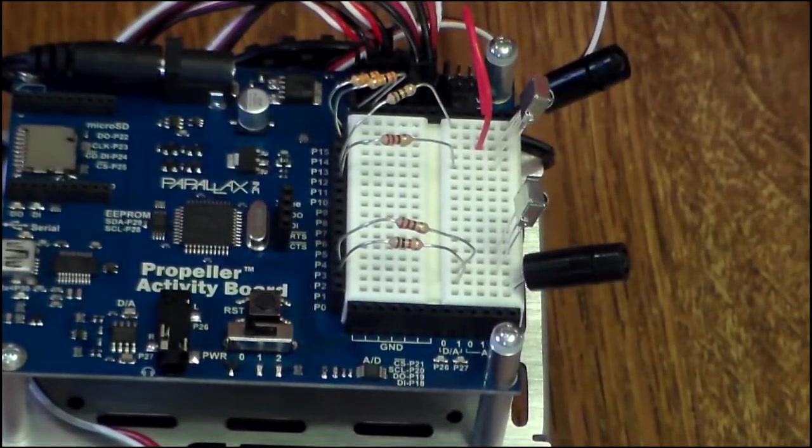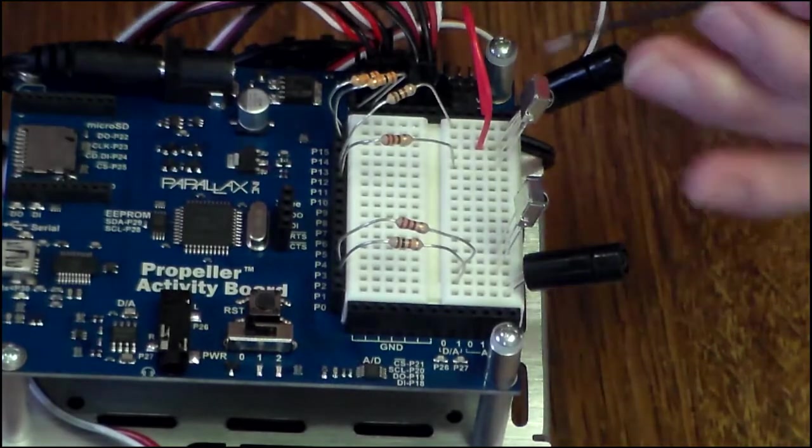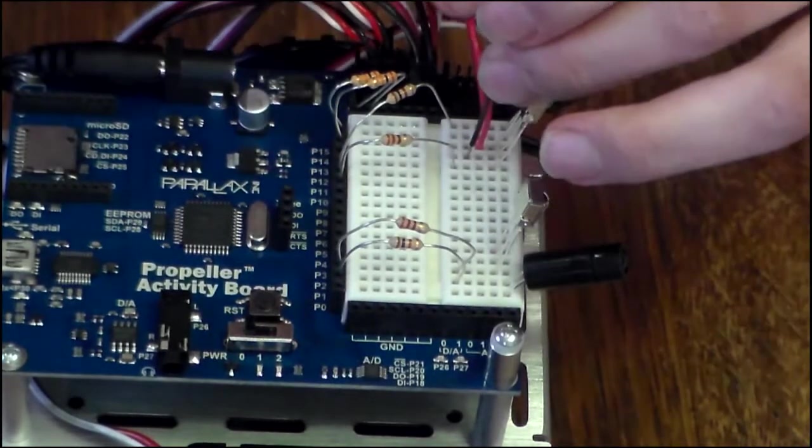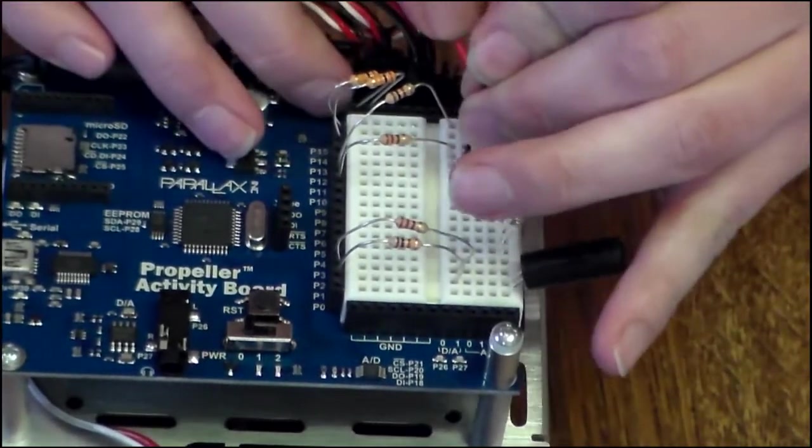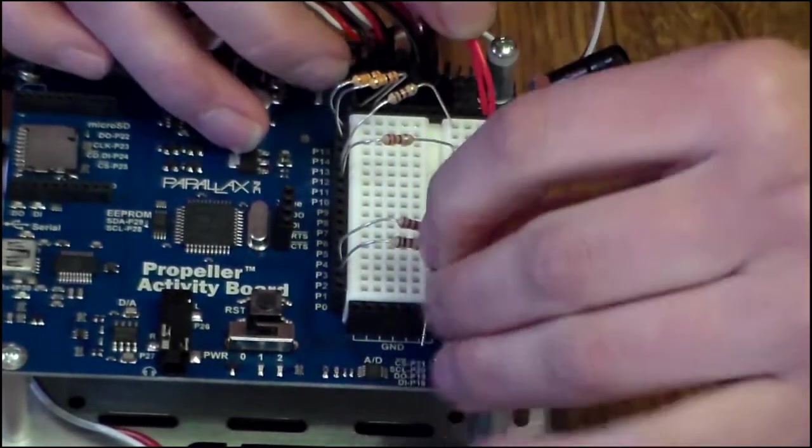Now we need to connect the receiver with ground. So we'll plug that from the middle pin of the receiver, and wire that one over to the ground.